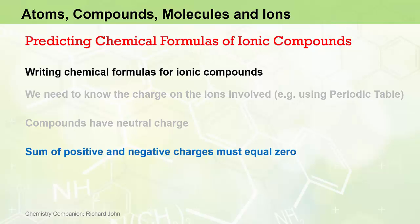By way of example, let's start with an ion that we should be very familiar with by now — the Na+ sodium ion. If it comes together with the Cl− chloride ion, what would be the chemical formula of the salt that results? The salt that forms from these two ions is sodium chloride, NaCl. The individual ions come together in a one-to-one ratio: the 1+ charge on the sodium ion cancels out the 1− charge on the chloride ion, making the compound neutral overall.